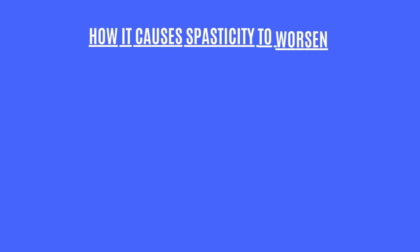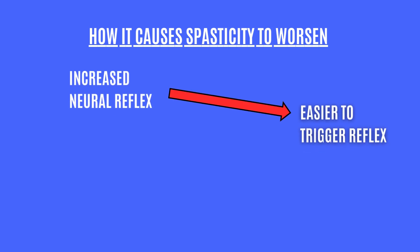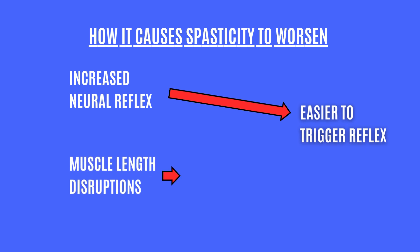From these two reasons, we can see how they actually play to each other's disadvantage. First, when the neural reflex is more exaggerated, a small movement can trigger the neural reflex. Second, when there is muscle length disruptions and shortening of the muscle length, this will in turn also lead to an easier activation of the neural reflex. Hence, this vicious cycle is what we see in spasticity and contractures.